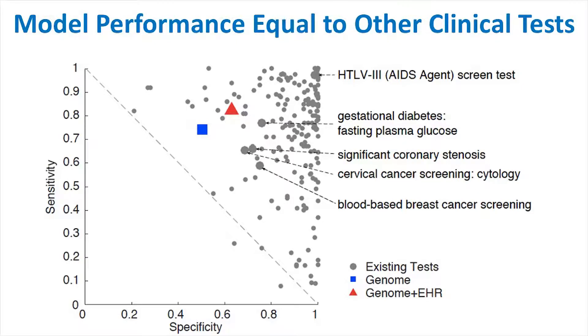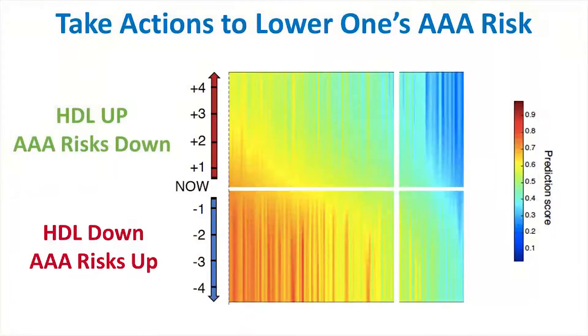Why is this a big deal? We think it is important because the information is actionable. People at high risk for AAA could do things to lower their risk, such as increasing their HDL. This is something they really should do if they fall into this high risk category.